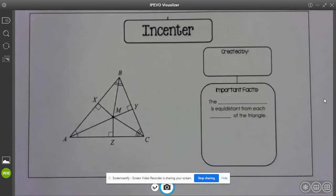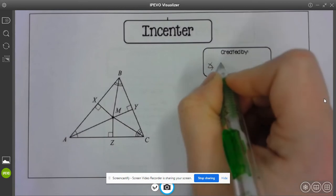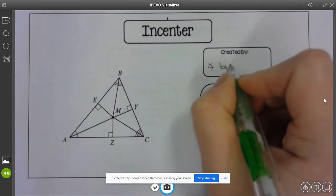And incenter, you'll notice I have double tick marks inside each of my main vertex angles, so that tells me this is created by these angle bisectors.